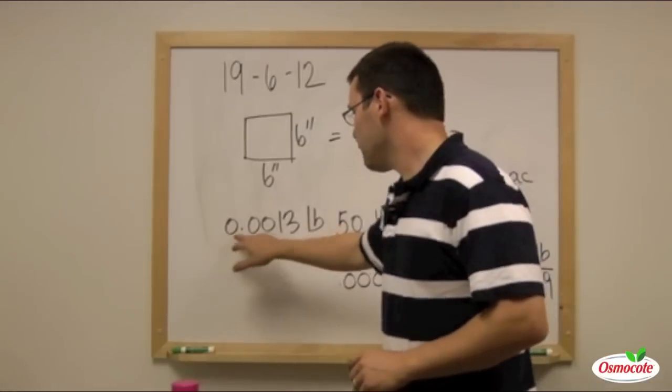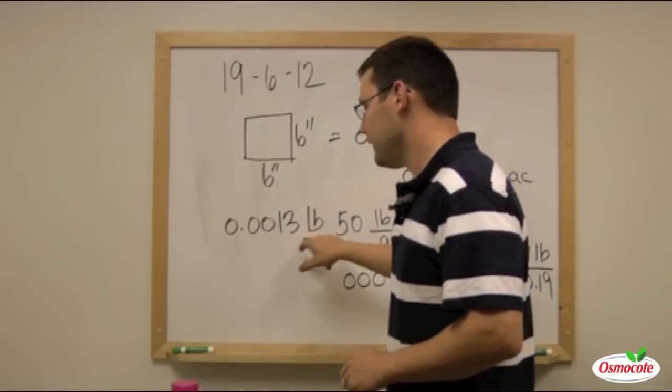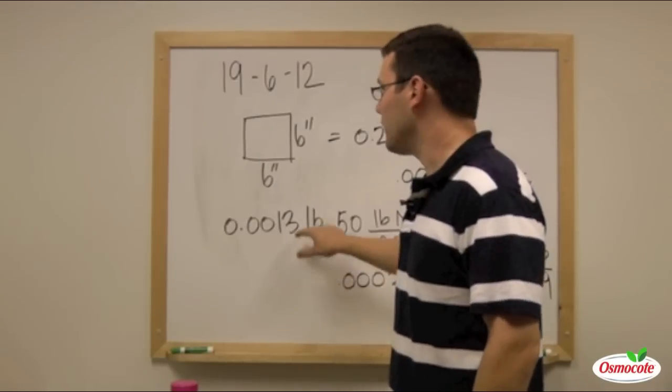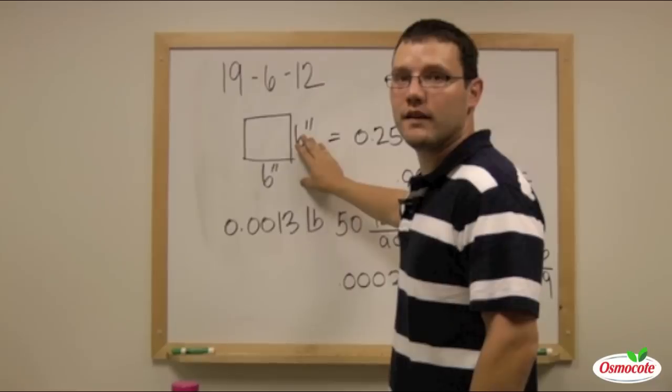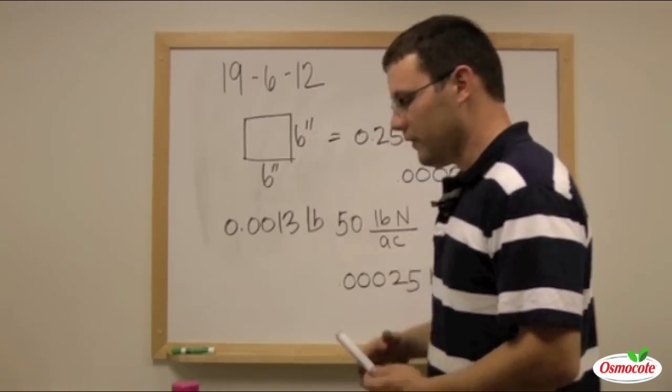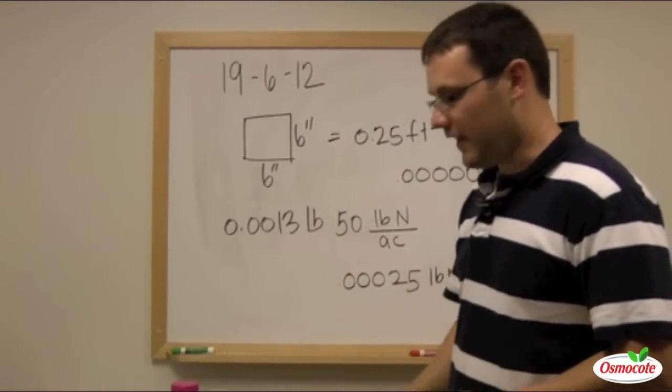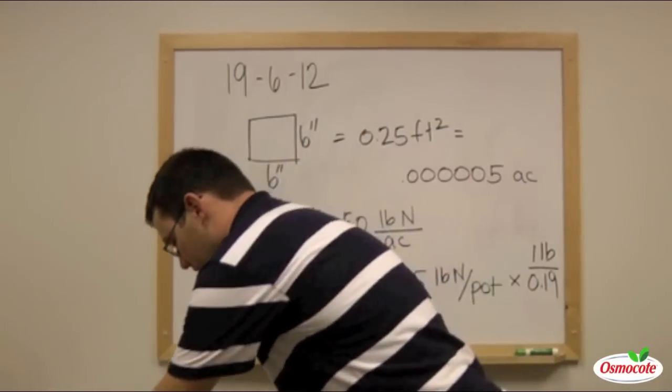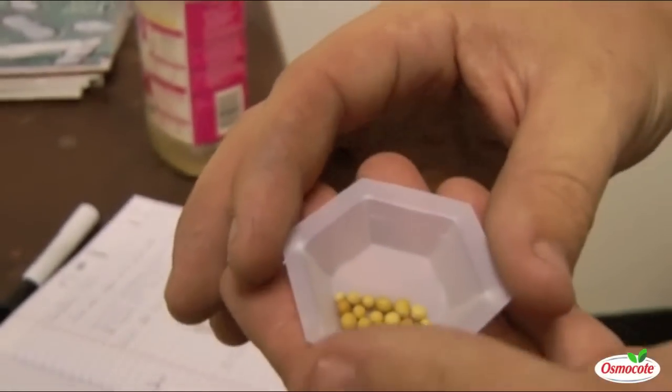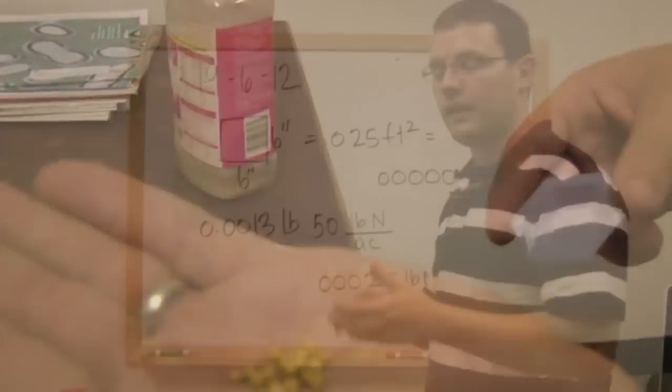That comes out to 0.0013 pounds of Osmocote per 6-inch square pot. So I've measured that out downstairs on the scales, and that is the amount of Osmocote that we need per 6-inch square pot.